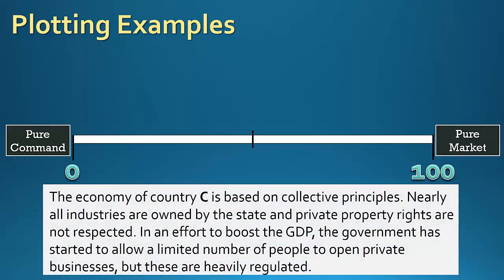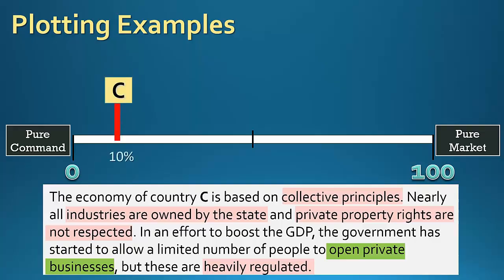Finally, let's try country C. The economy of country C is based on collective principles. Nearly all industries are owned by the state, and private property rights are not respected. In an effort to boost GDP, the government has started to allow a limited number of people to open private businesses, but these are heavily regulated. There are a lot of command terms here, so this is looking very command-heavy. But there is a little bit of market terminology — the government is allowing some private businesses. So I'm going to put country C at about 10%.